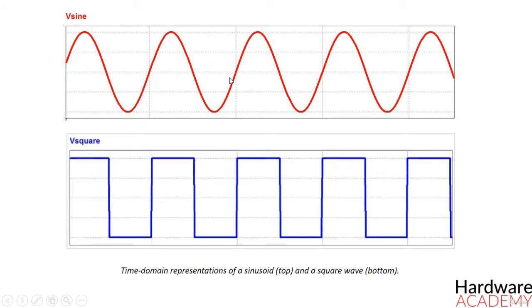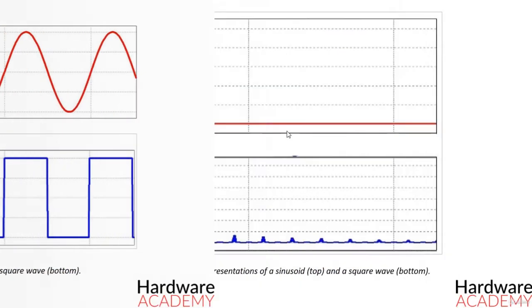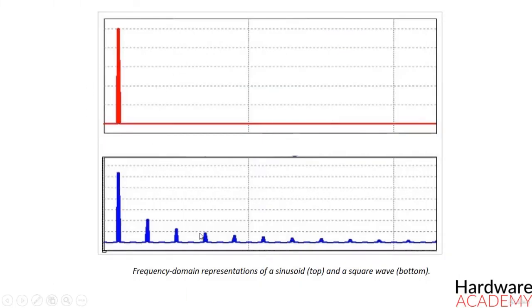In contrast to the time domain representation in which one moment in time corresponds to only one voltage value, a frequency domain representation which is also called a spectrum conveys information about a signal by identifying the various frequency components that are simultaneously present.